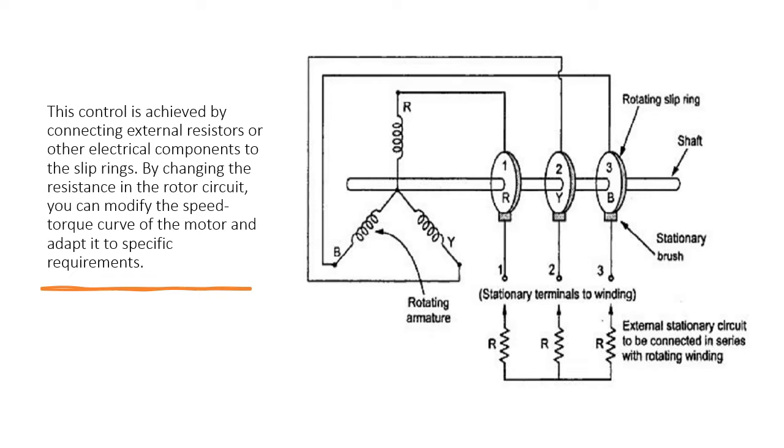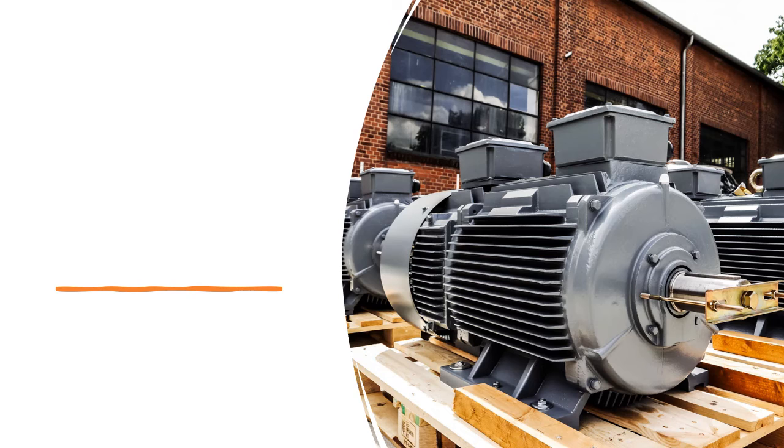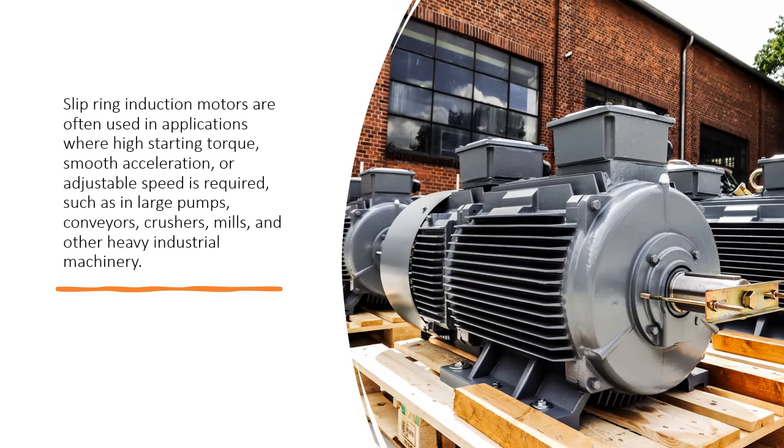This control is achieved by connecting external resistors or other electrical components to the slip rings. By changing the resistance in the rotor circuit, you can modify the speed torque curve of the motor and adapt it to specific requirements.